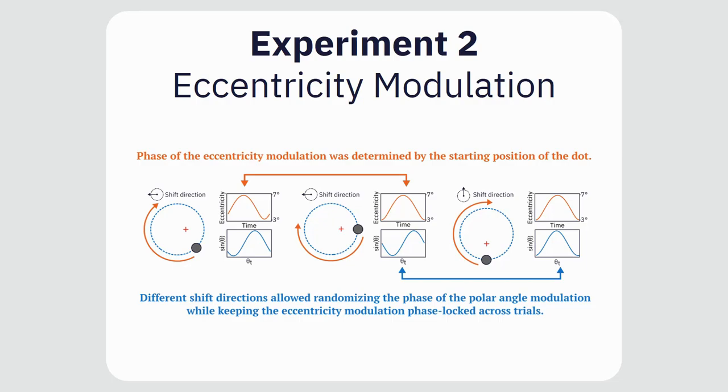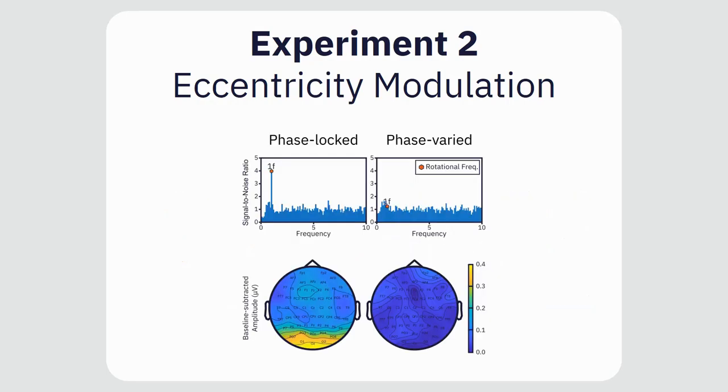Similarly to experiment 1, we expected signals related to the eccentricity modulation to survive in the phase locked condition but not in the phase varied condition. And the results confirmed our expectations, indicating that the frequency components observed in the phase locked condition depend solely on the eccentricity modulation.